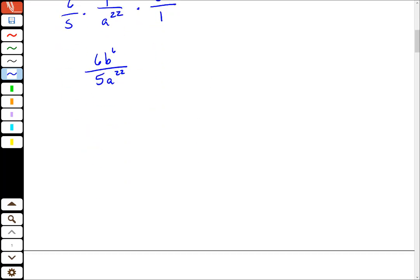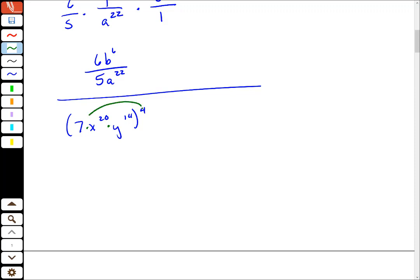So the next question I get looks something like this. 7 x to the 20th y to the 14th to the 4th power. So this is something to the power. This, because this is all multiplication in here, this distributes to each of these pieces. So this is 7 to the 4th, x to the 20th to the 4th, and y to the 14th to the 4th.